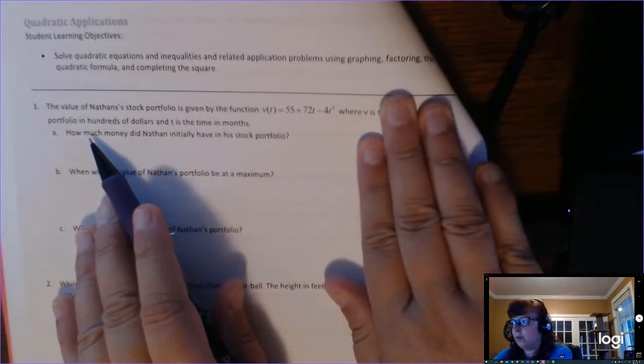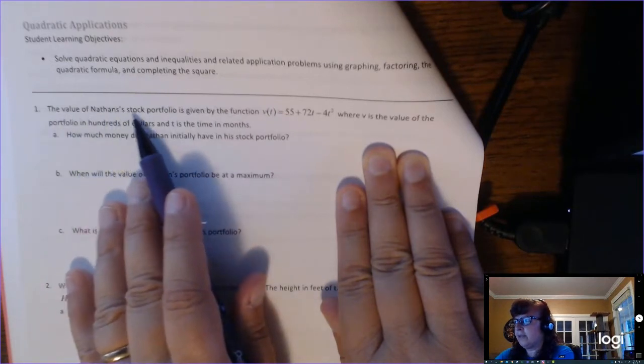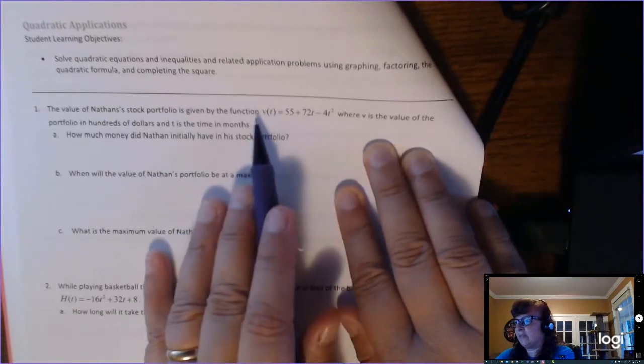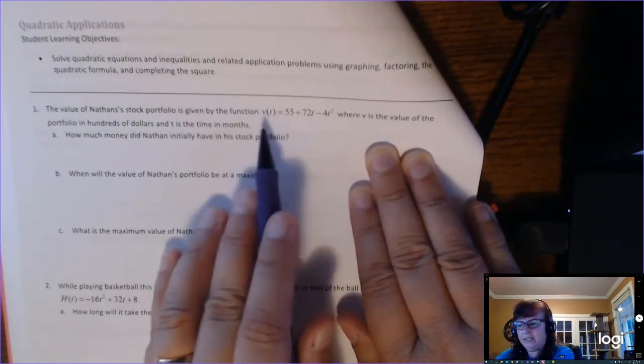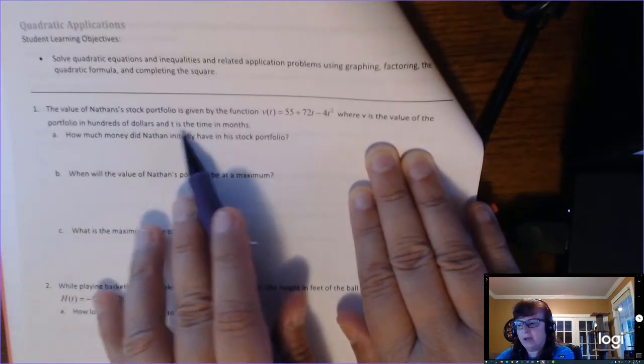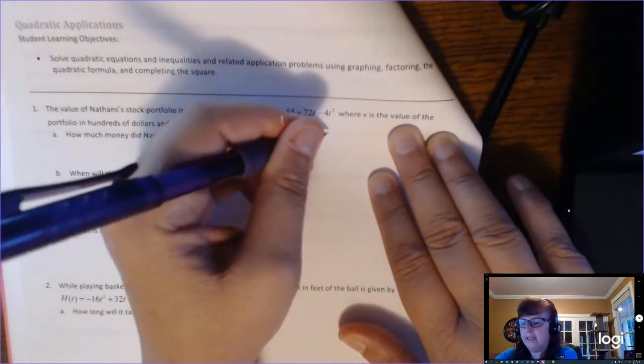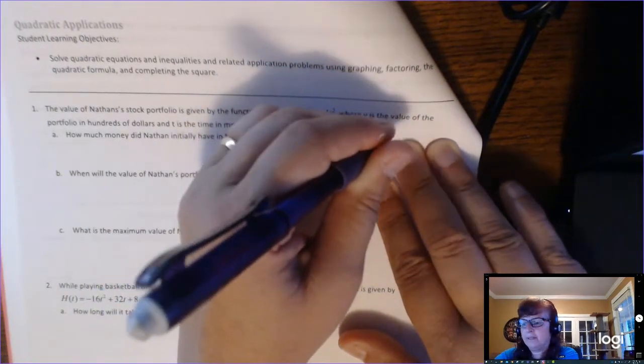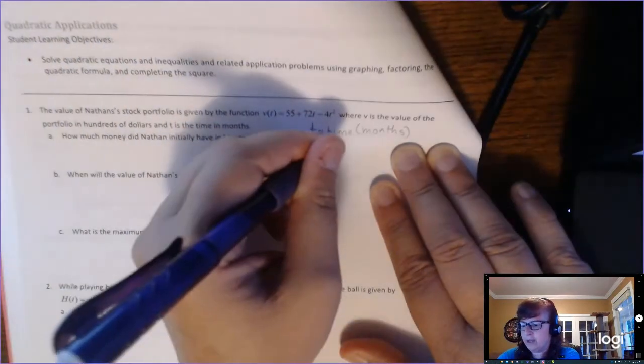The second thing, I'm just going to review one more time. If you read the problem, it says the value of Nathan's stock portfolio is given by this function, and it's in function notation, and we understand all about that. V is the output, it's the value of the portfolio in hundreds of dollars, and t is time in months, so I would take time to write that down. T is time, this time in months, and the output v is in hundreds of dollars.